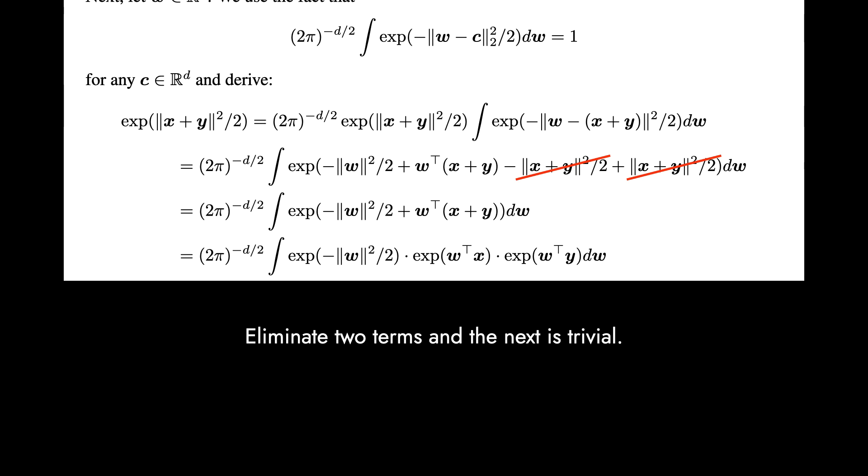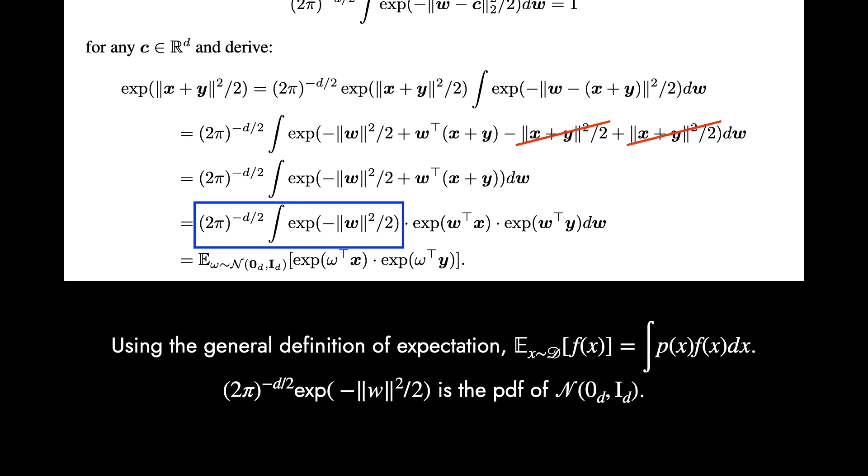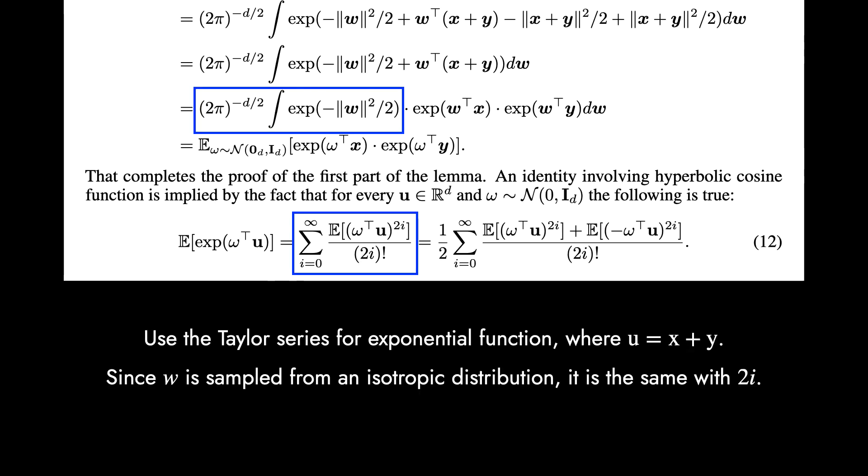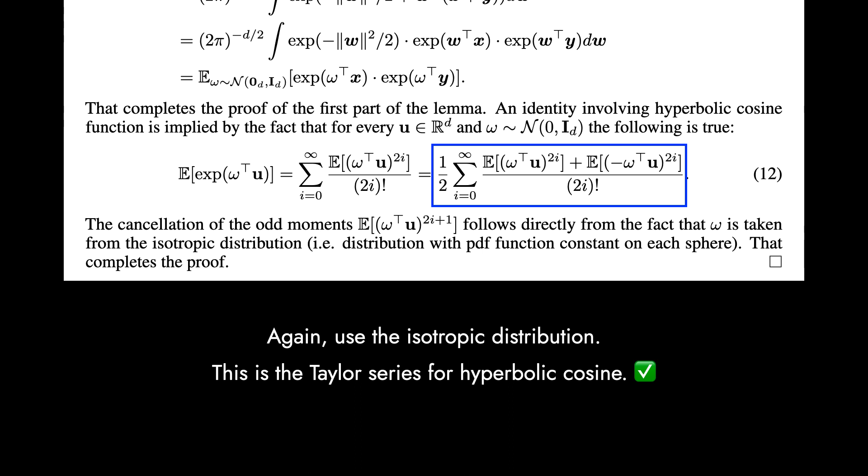Then use the binomial theorem again to cancel out with the other term. The two terms are gone. Using the general definition of expectation, we can rewrite using the expectation. Keep in mind that W is sampled from the Gaussian distribution. Use the Taylor series for exponential function to get the blue box term. Here is one trick: since W is sampled from isotropic distribution centered by zero, the odd i terms are canceled out in this infinite series. This is Taylor series for hyperbolic cosine, so the proof is completed.